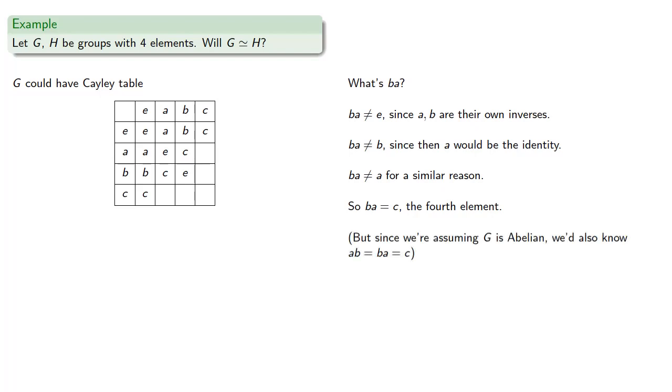In this case, since we're assuming G is abelian, we'd also know that AB is equal to BA, which is equal to C. And since G is a group, its Cayley table will satisfy the Latin square property. So we can complete the Cayley table.